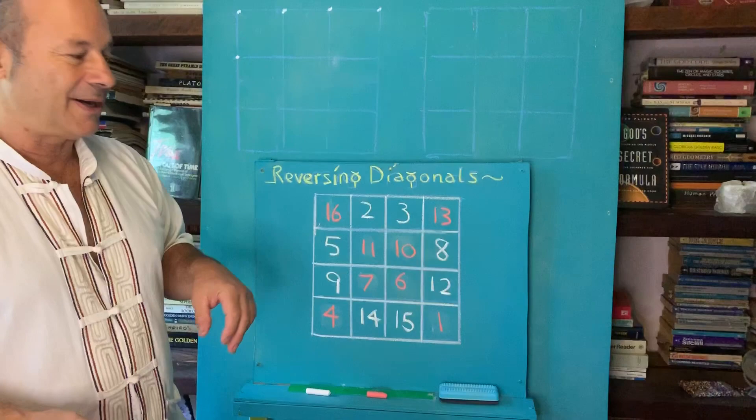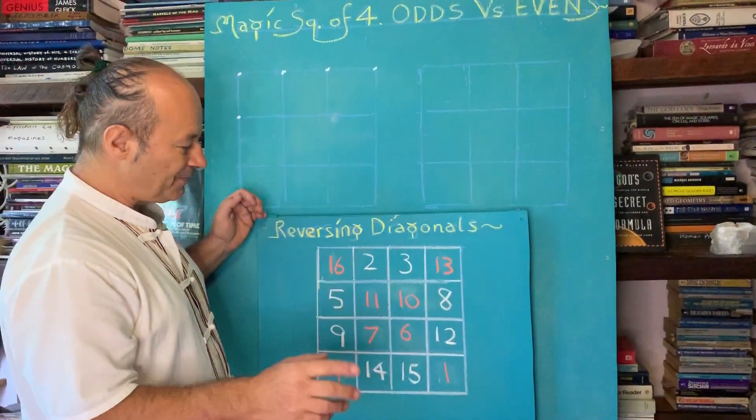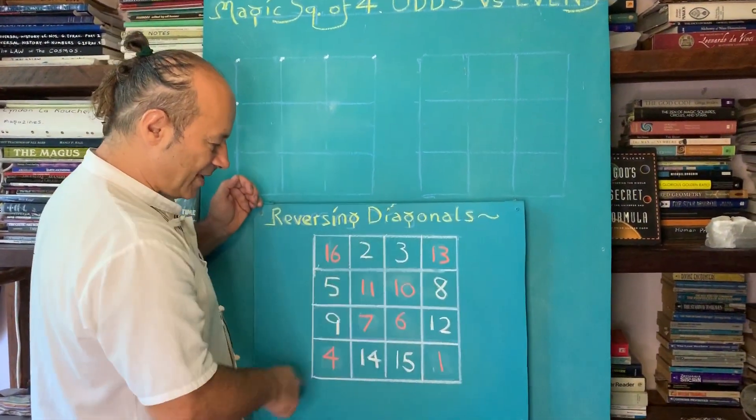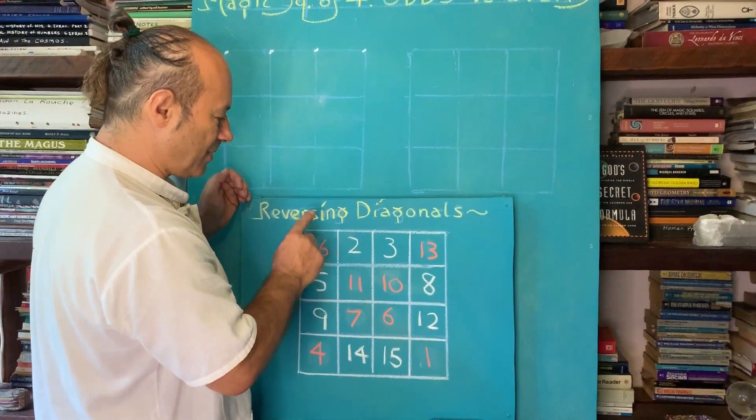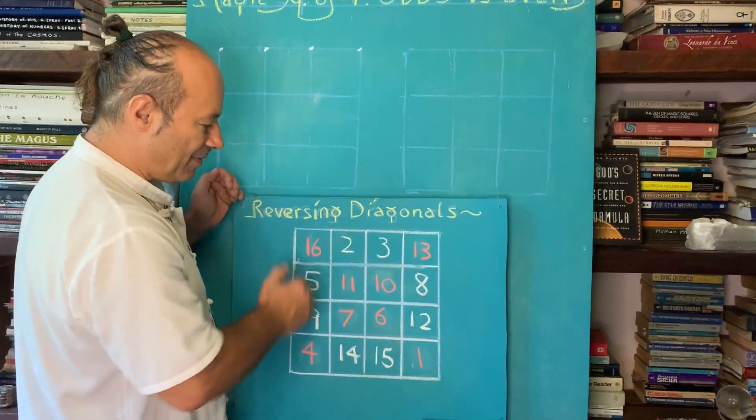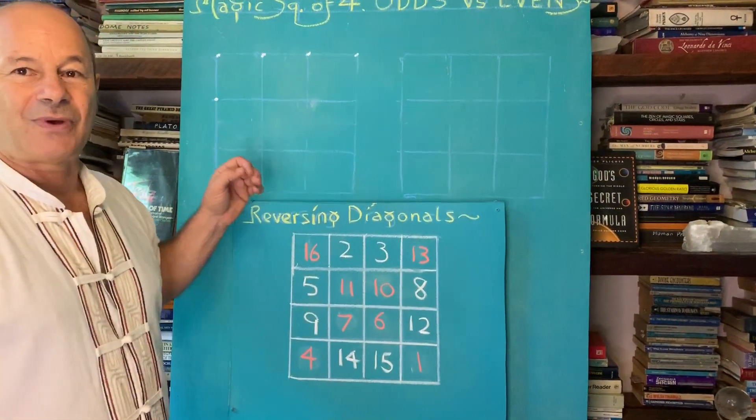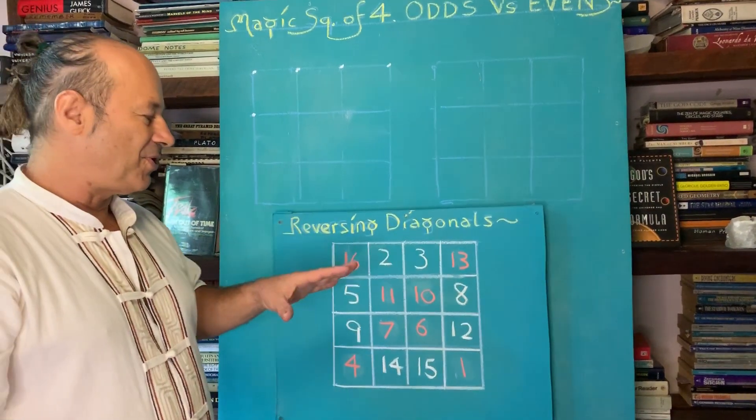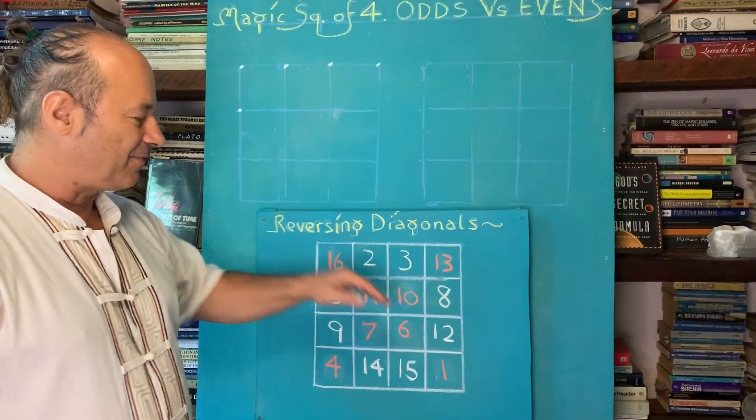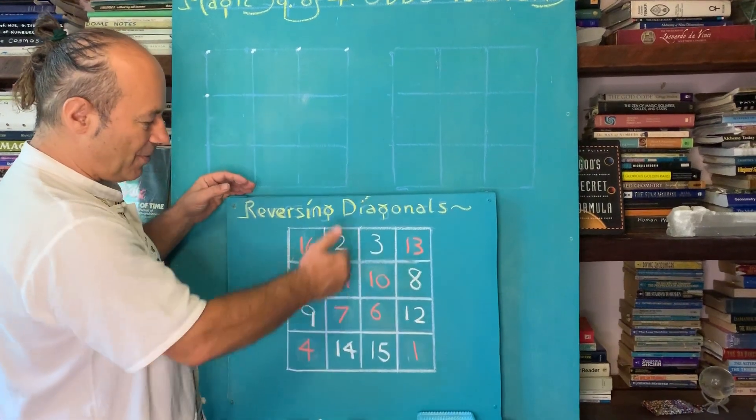It's magic because when we had the first diagonals, when it was natural square, the sum of the two diagonals of the natural square already added up to 34. It was the only thing that added up to 34. But now we've got more things that add up to 34.